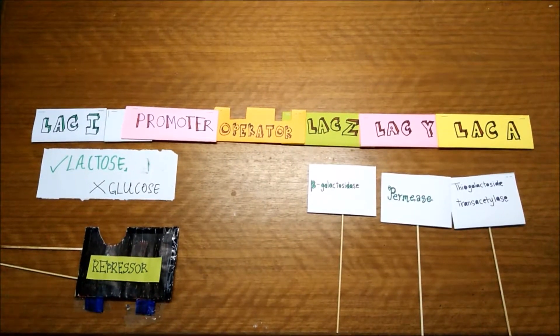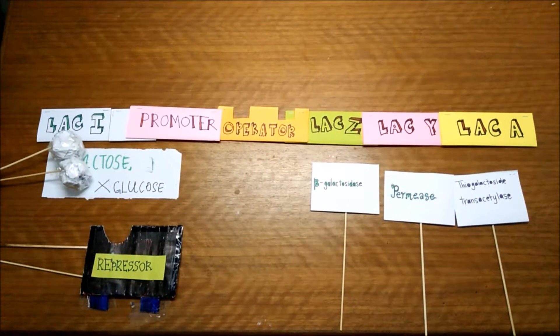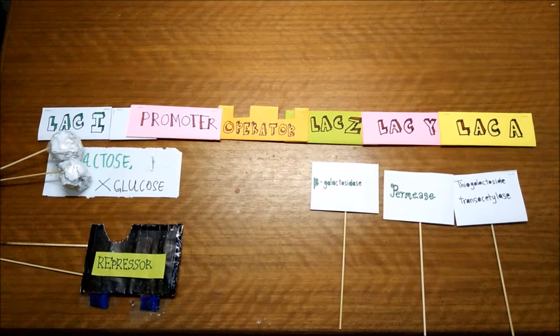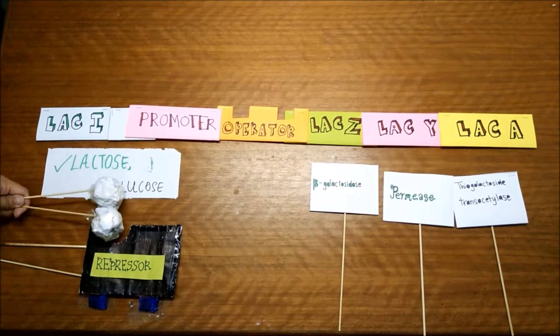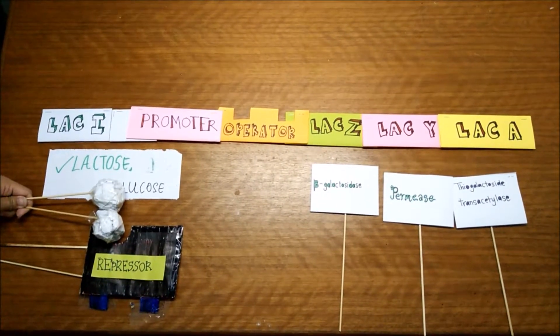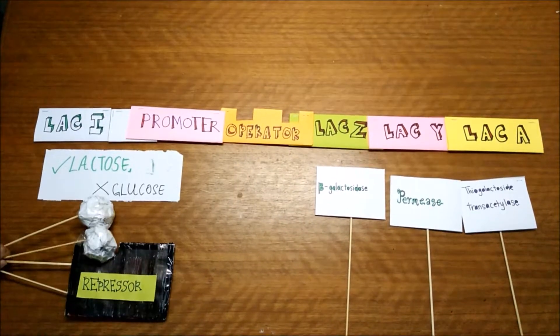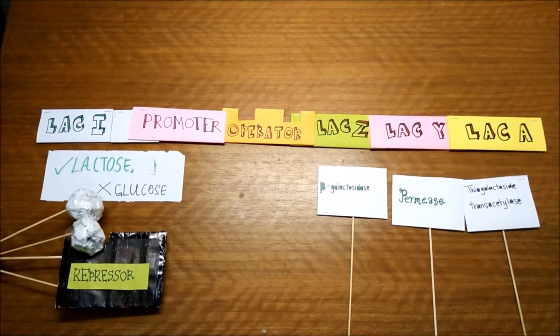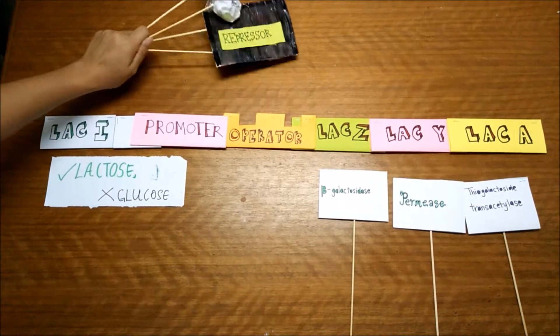In second scenario, we have lactose but no glucose. So lactose will bind to the repressor and change its conformational shape. So repressor cannot bind to the operator.